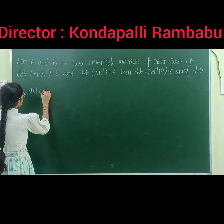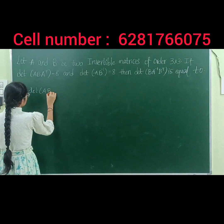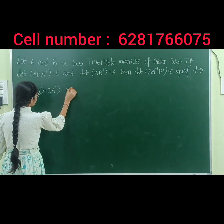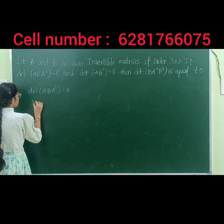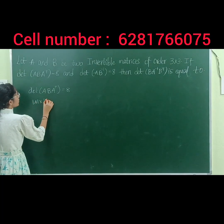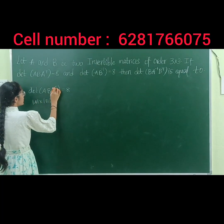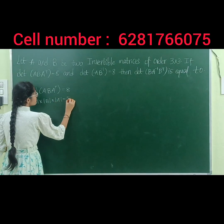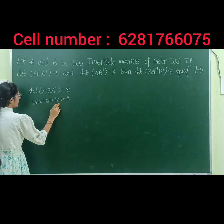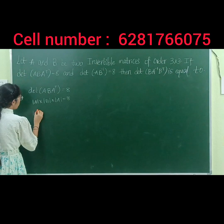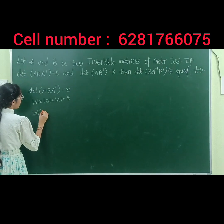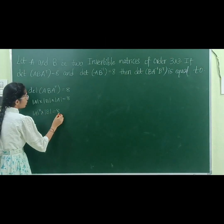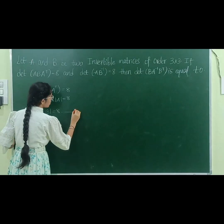Let |A·B·Aᵀ| = 8. Then |A| into |B| into |Aᵀ| gives us |A|² · |B| = 8. Remember this as equation 1.